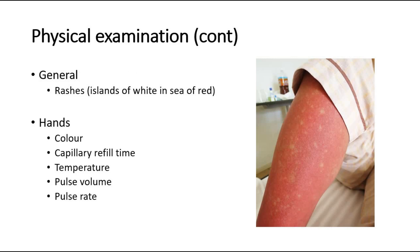On general inspection, look out for rashes. The typical rash in dengue is described as 'islands of white in a sea of red,' as shown in the picture — white patches within a sea of red. On the hands, check the hemodynamic status using CCTVR: colour (pale or pink), capillary refill time (prolonged more than 2 seconds suggests dehydration), temperature (warm or cold extremities), pulse volume (good or weak), and pulse rate.